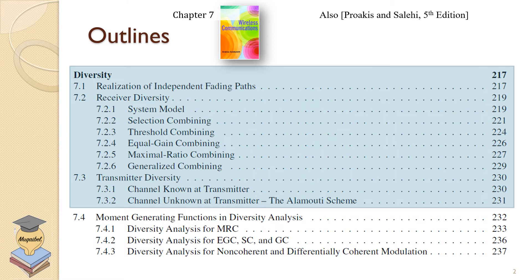We're going to focus specifically on the first three parts: realization of independent fading paths, receiver diversity. We'll look at system model, selection combining, threshold combining, equal gain, and maximum ratio combining.